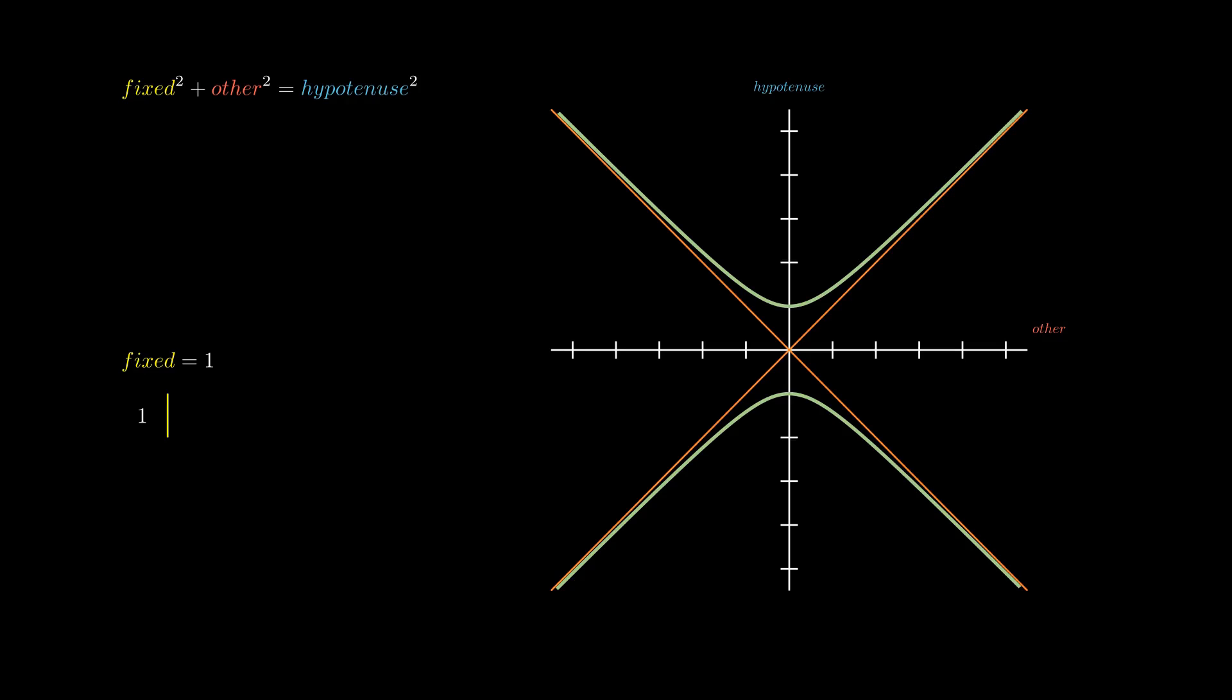Our graph looks a little empty on the right and left sides. That's because we chose the y-axis to represent the hypotenuse and the x-axis to represent the other leg. This is the graph of y-squared minus x-squared equals 1.